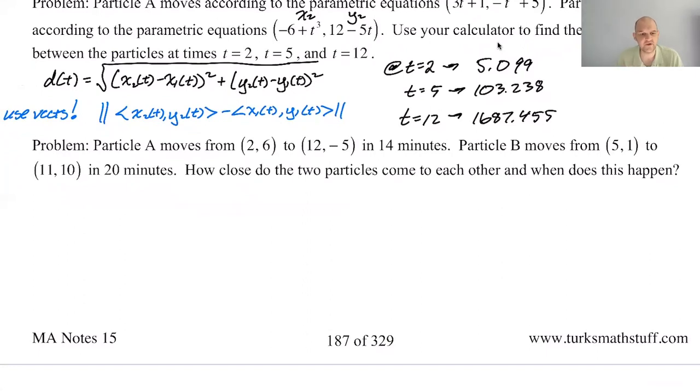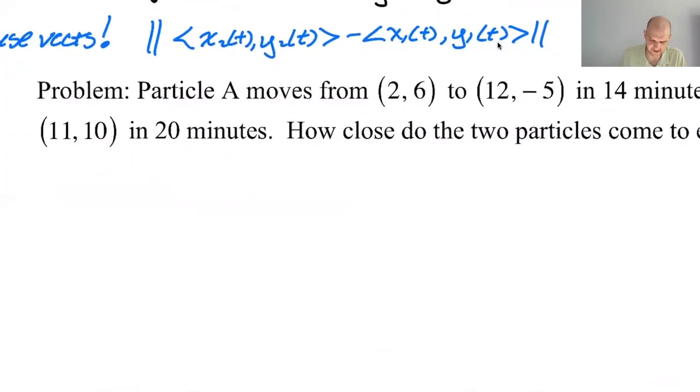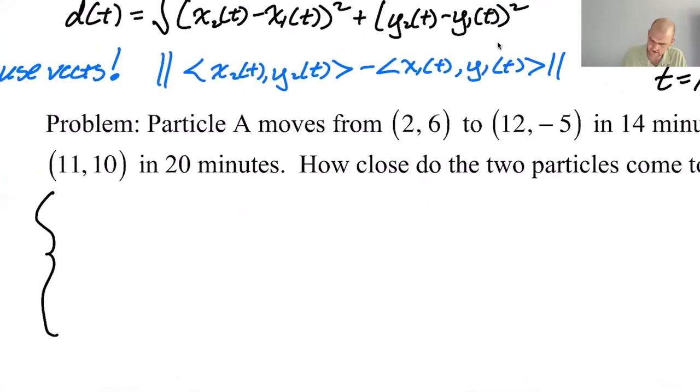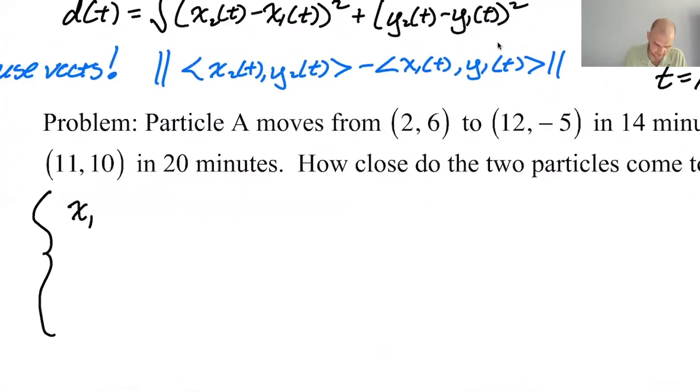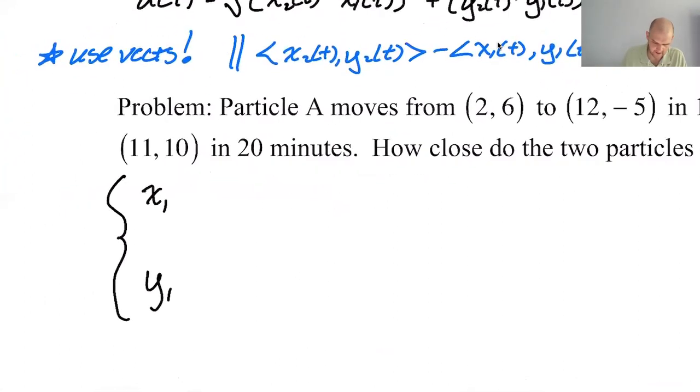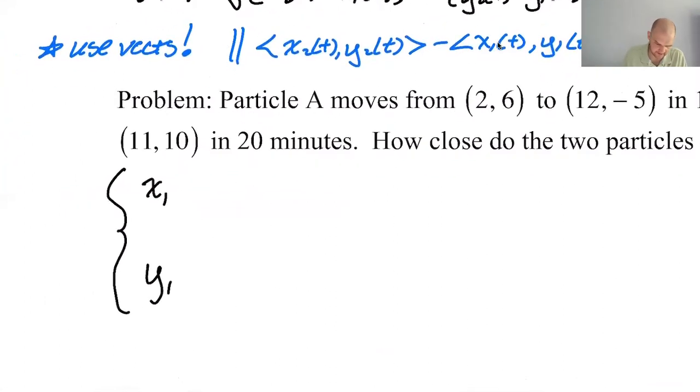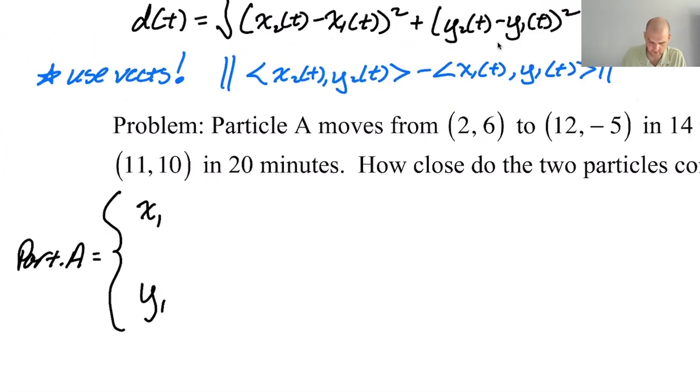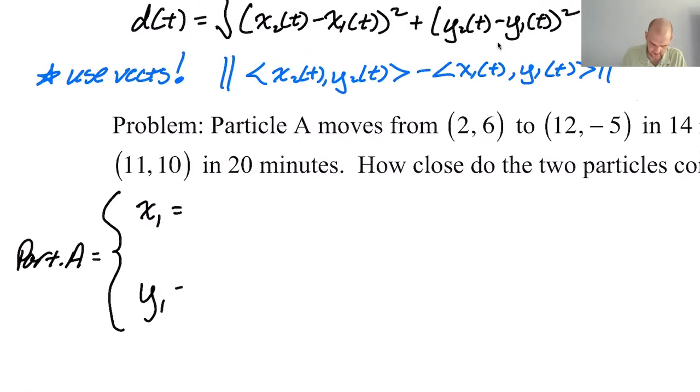So in this case we have a particle A which moves from 2, 6 to 12, negative 5 in 14 minutes. Let's write an equation for that. So I'm gonna use subscripts for that. Nothing wrong with blue, but I'm pretty much a black ink type of person. So I'm gonna use subscript one. I should probably use A, but I'm gonna put article A equals. And then we're using one. First letter of the alphabet. It's fine.